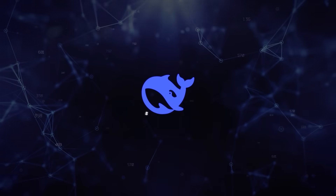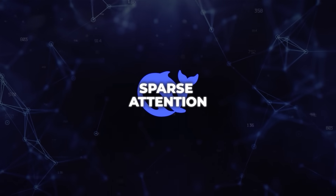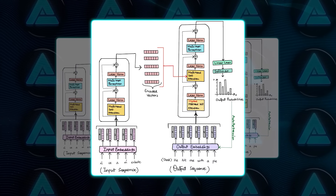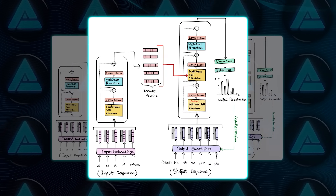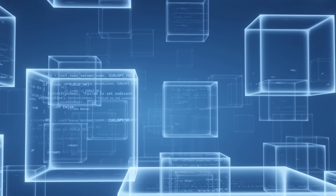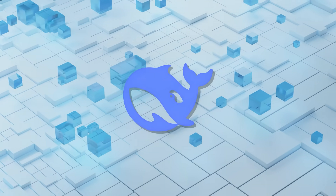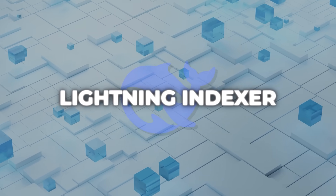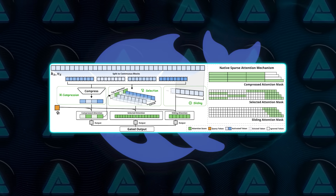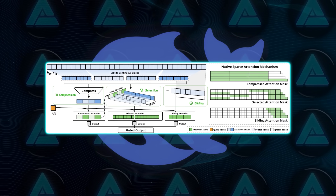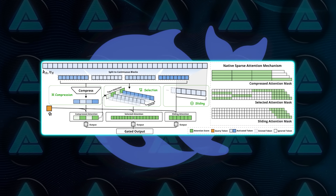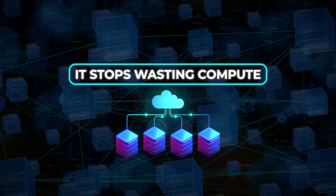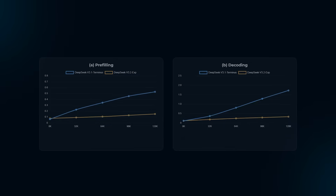DeepSeek's key innovation is something called DeepSeek Sparse Attention, or DSA. Traditional transformer attention scales with the square of the sequence length — written as O(L²) — which gets insanely expensive as you increase context size. DSA changes that. It introduces what they call a lightning indexer that selects only the most relevant tokens for each query, cutting complexity down to O(L × K), where K is a fraction of the total sequence. In simpler terms, it stops wasting compute on irrelevant tokens and focuses only on what actually matters.